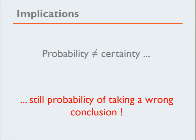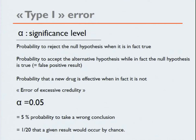Let's go to type 1 errors. What is the type 1 error? It's the probability to reject a null hypothesis when in fact it is true — or in better words, the probability that a new drug is effective when in fact it is not. This is an error of excessive credulity. At the five percent level, you still have a five percent probability of taking a wrong conclusion.